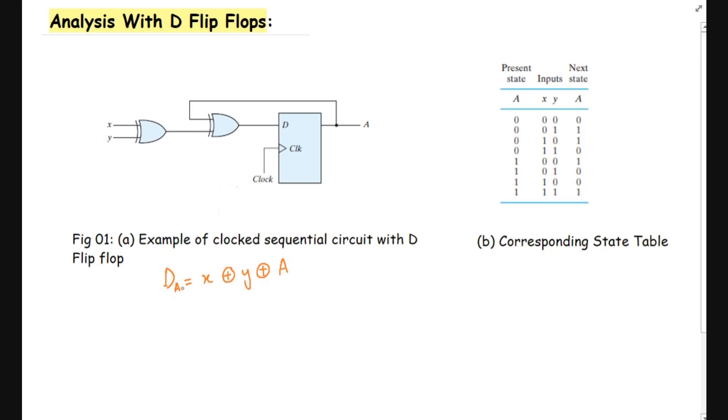We will write it as D and A is the subscript which refers to the output of the flip-flop. Here we can see that the output A is the given output of this D flip-flop. This is called the flip-flop input equation.